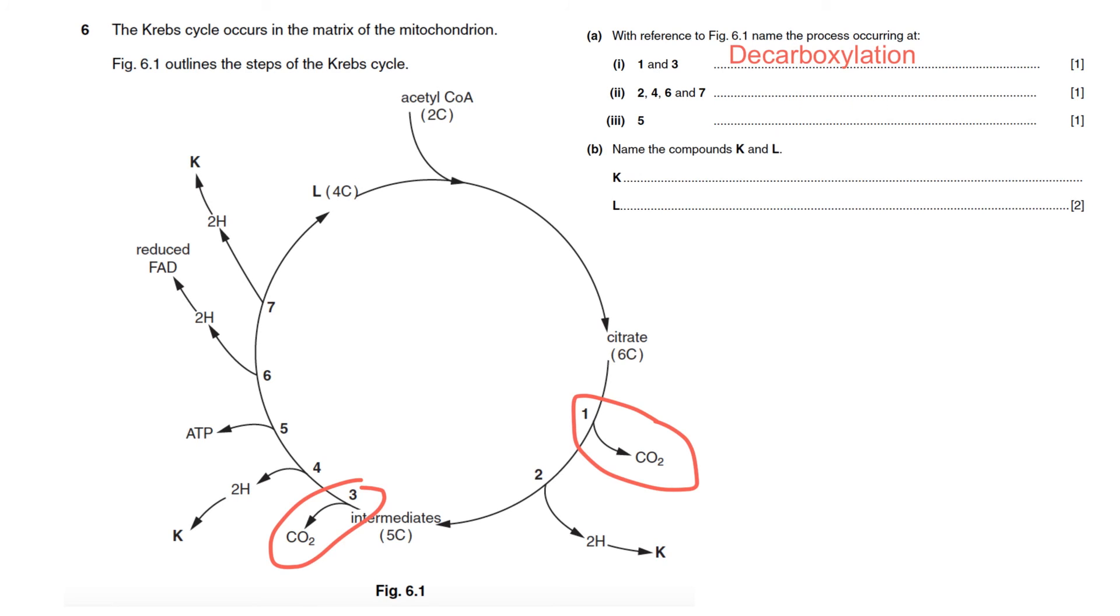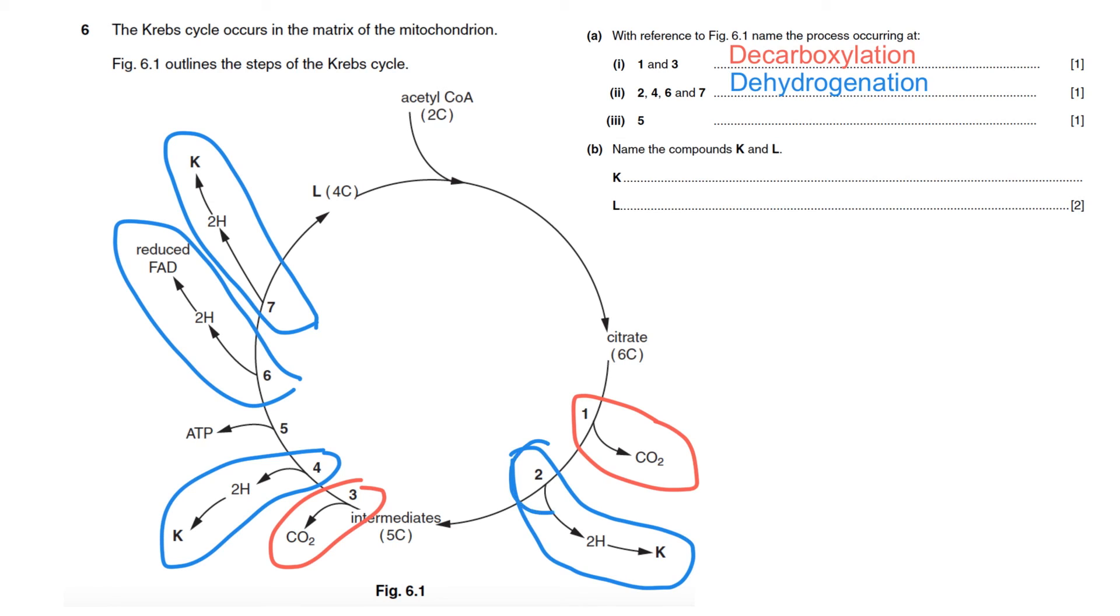What about 2, 4, 6, and 7? At 2, hydrogen splits. 4, another hydrogen. 6, another hydrogen. And 7, hydrogen splits. What is the name of the process in which hydrogen splits away? Dehydrogenation. Well, pay attention here. When this compound gives away hydrogen, it also gives away electrons. So that compound is oxidized. So we can also write here either dehydrogenation or oxidation.